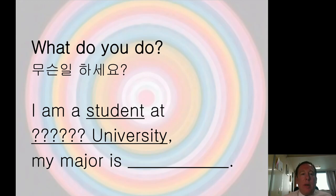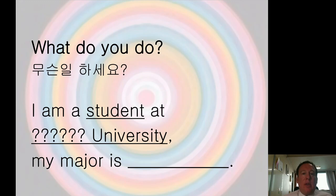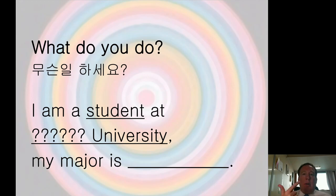The next question I would ask is 'Musenil Haseo' in Korean — in English, 'What do you do?' or 'What is your job?' Most of you are students. Student is not really a job because you don't get paid, but you can still ask the question. You can answer in three parts: Part one: 'I'm a student.' Part two: 'At Dongnam Health University.' Part three: 'My major is...' — and then say your subject.